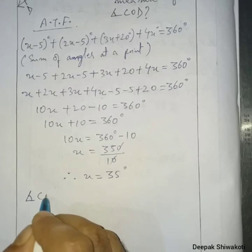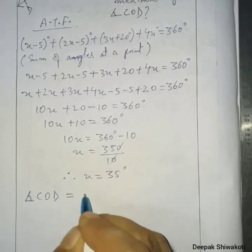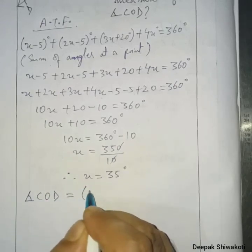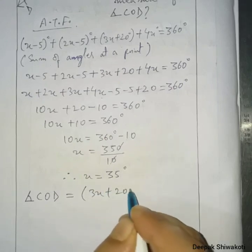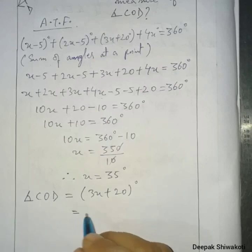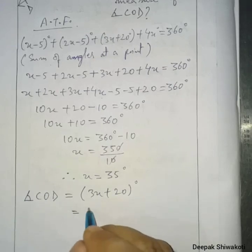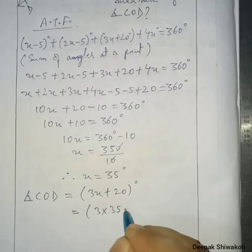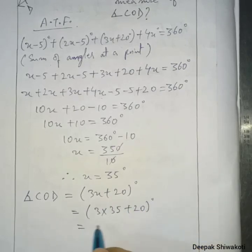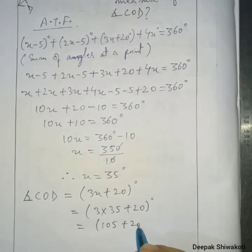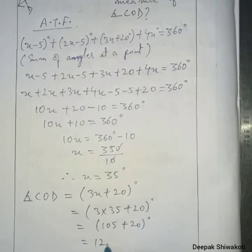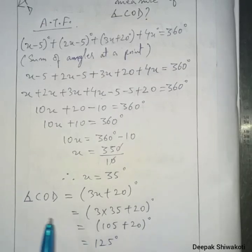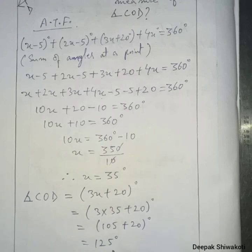Now, angle COD according to the figure is 3x plus 20 degrees. Substituting x equals 35: 3 times 35 is 105 plus 20, which equals 125 degrees. So the measure of angle COD is 125 degrees.